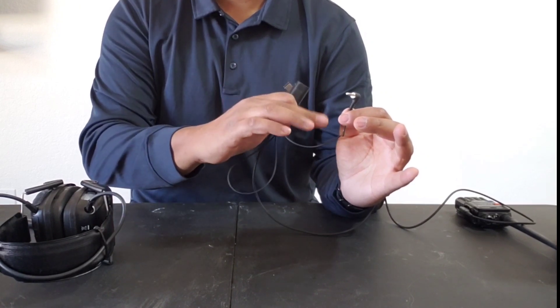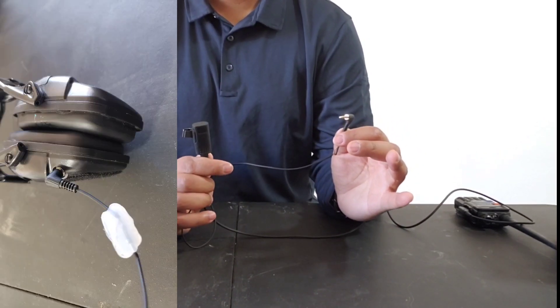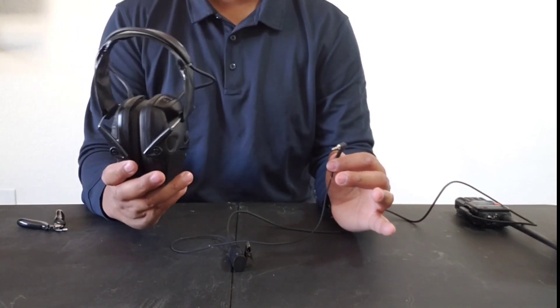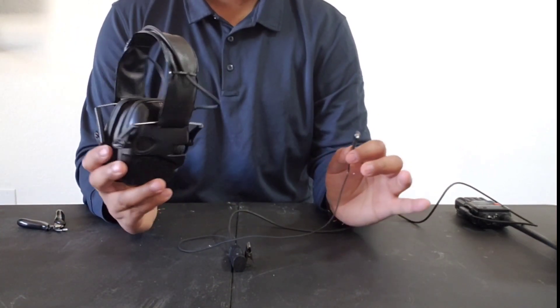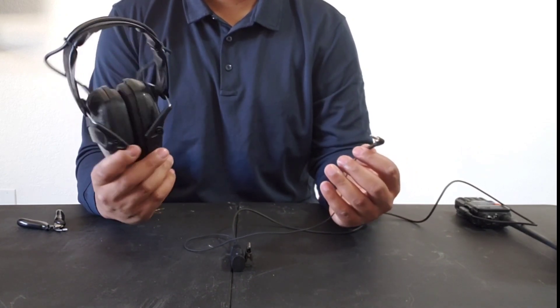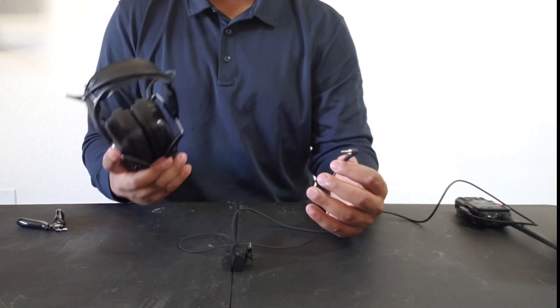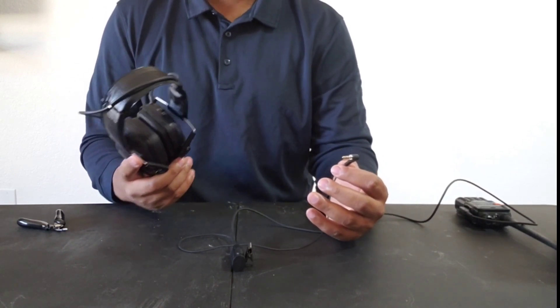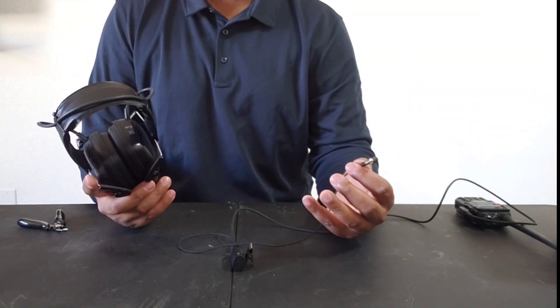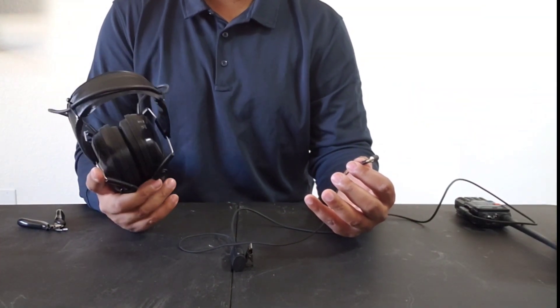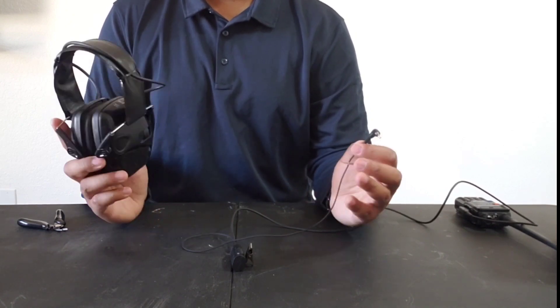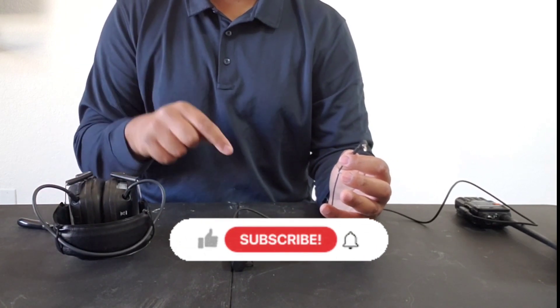Just make sure to seal that up really good. And now you've got yourself a cheap communications setup that you didn't have to spend $60 to $80 on. And the same process you saw me do here, you can do with what comes with the Baofeng radio. This was just a slightly more robust cable. The links to all of these things that I'm using here, I will put in the description down below.